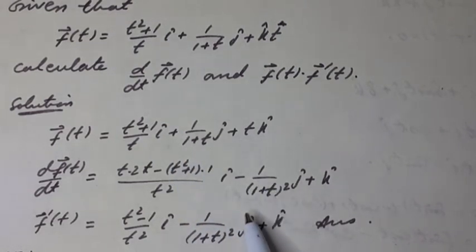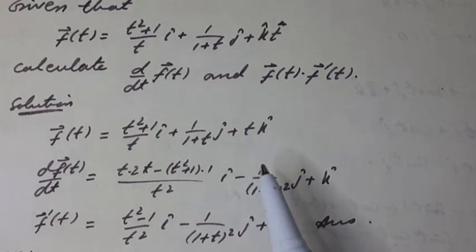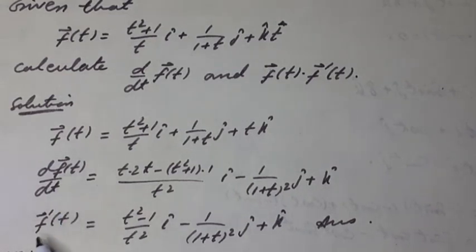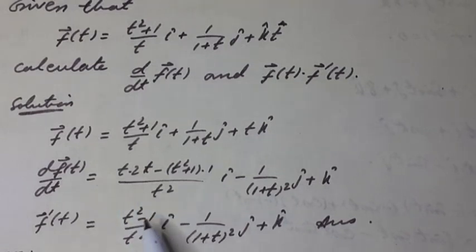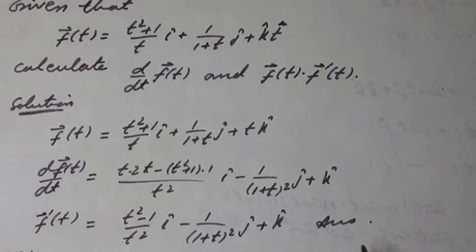Therefore, f-vector-dash(t) = (t² − 1)/t² i-hat − 1/(1 + t)² j-hat + k-hat.